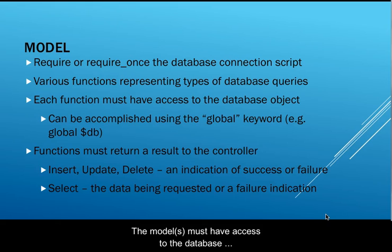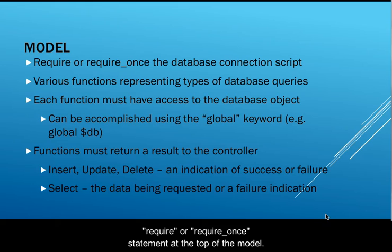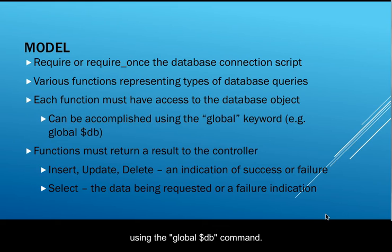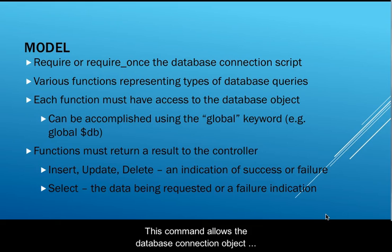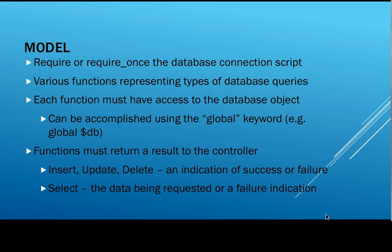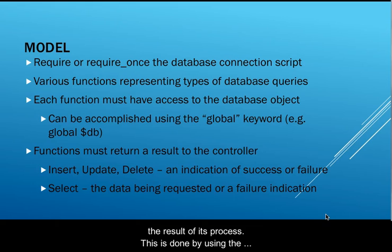The model or models must have access to the database connection object. This is usually done using a require or require_once statement at the top of the model. Each database interaction type is stored within a custom function. Each function must have access to the database connection object — this can be accomplished by using the global keyword with the database connection variable name. This allows the database connection object, for example $db, to be used within the scope of the function. It is critical to remember that a function must also return the result of its process, done using the return command.